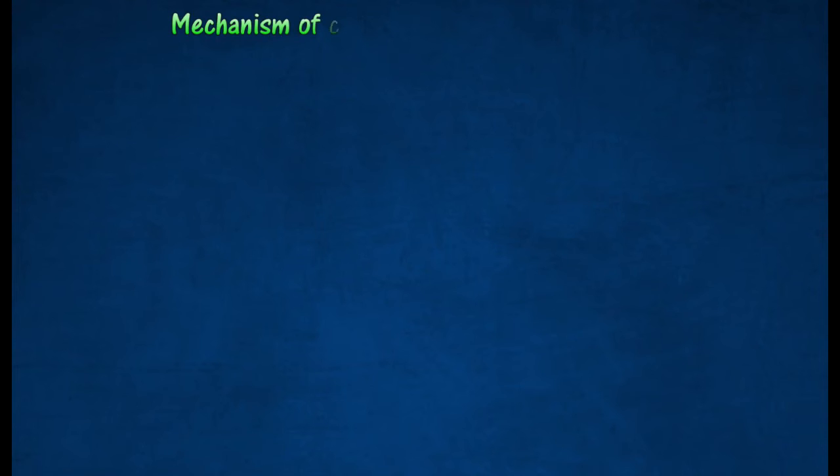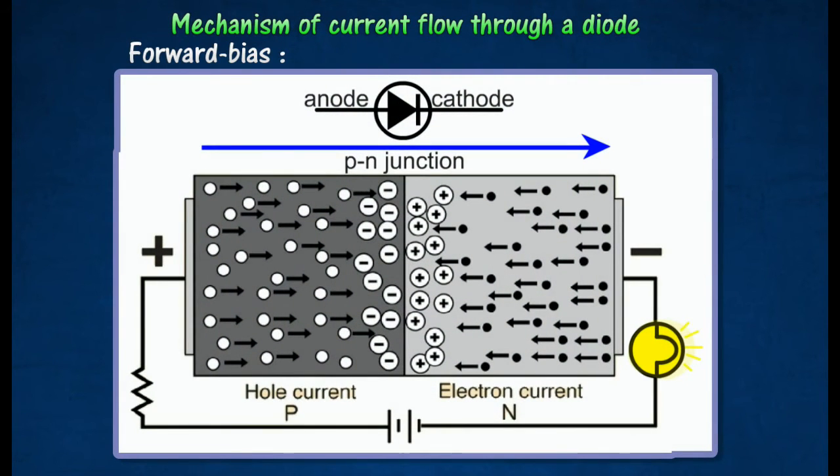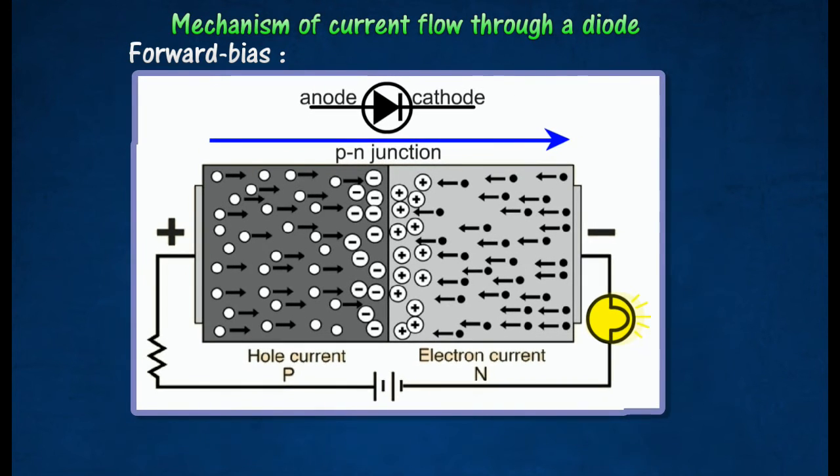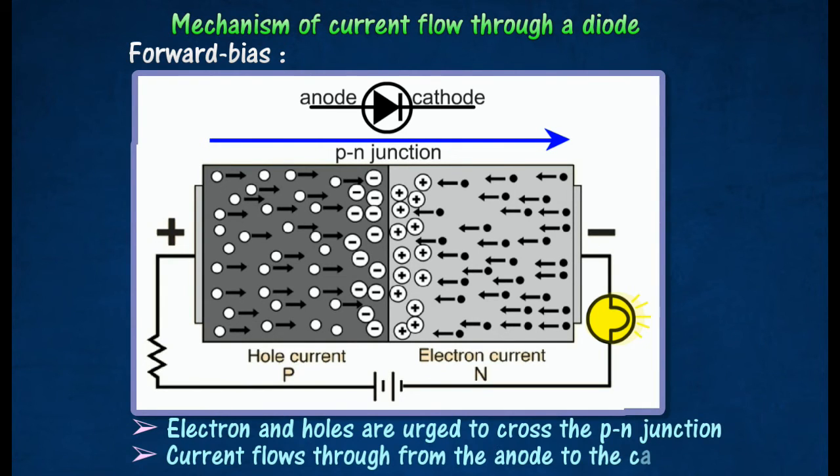The mechanism of current flow through a diode includes forward bias and reverse bias conditions. In forward bias, the positive terminal of the battery is connected to the P-type and the negative terminal to the N-type semiconductor. When the applied voltage is larger than the barrier potential, a large current flows through the circuit.